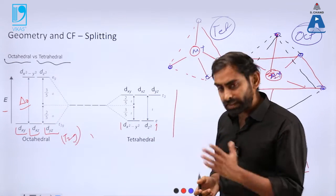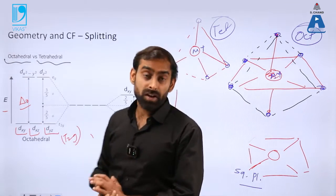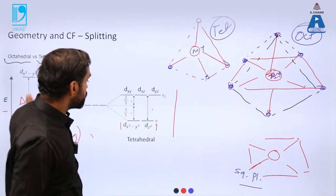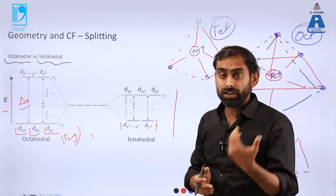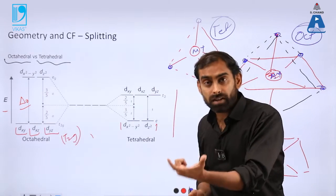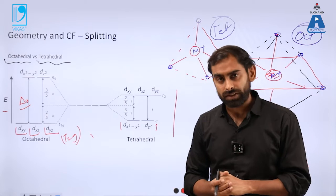Now what makes this happen? Why is it happening? Why there is just inversion of energy states between t2g and eg levels when we contrast and compare octahedral with that of the tetrahedral geometry?